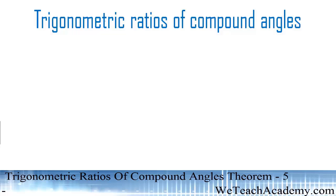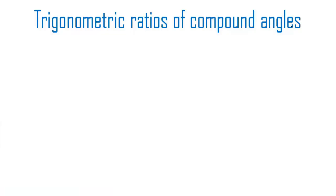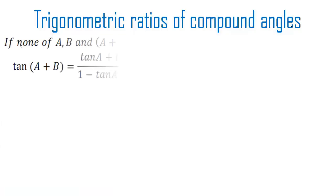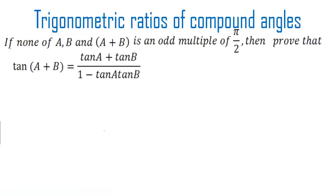Welcome to vteachacademy.com. In this presentation we are going to discuss trigonometric ratios of compound angles. Here I am going to try to prove the theorem that if none of a, b, and a+b is an odd multiple of pi by 2, then tan(a+b) is equal to tan a plus tan b divided by 1 minus tan a tan b.